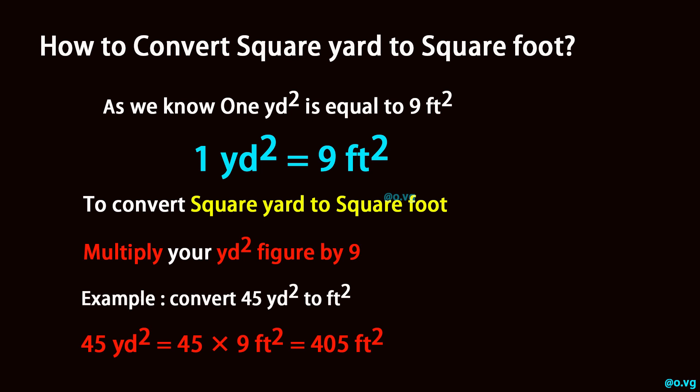Example: convert 45 square yards to square feet. Forty-five square yards equals 45 times nine square feet, which equals 405 square feet.